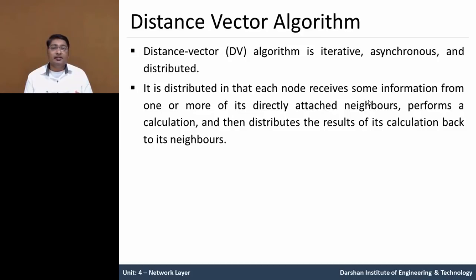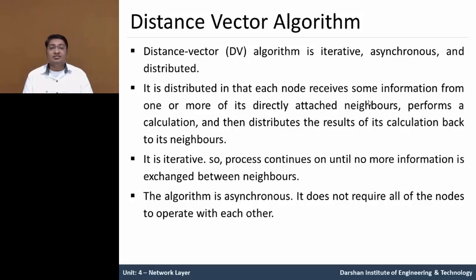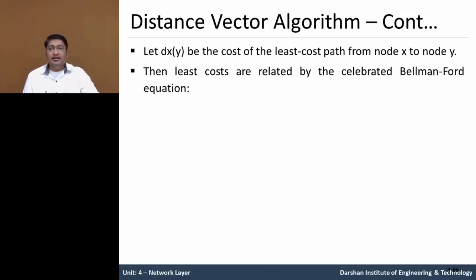It is iterative because the process continues until no more information is exchanged between neighbors — the iterative process continues until there is no more information to be exchanged. It is asynchronous because it does not require all of the nodes to operate in sync with each other.